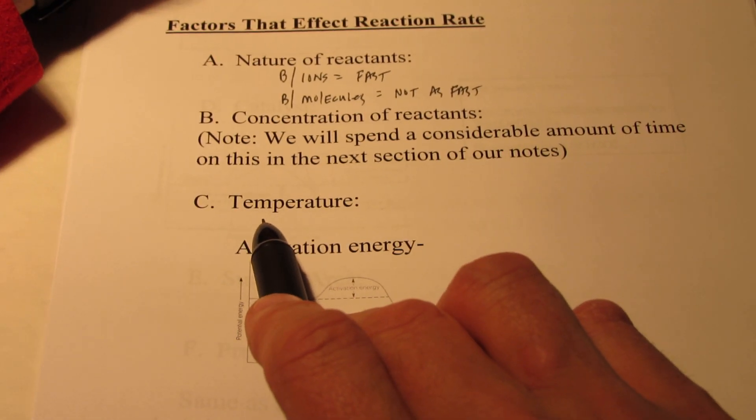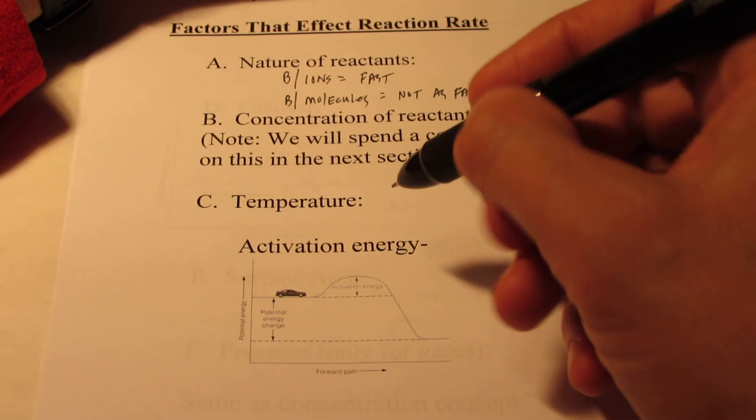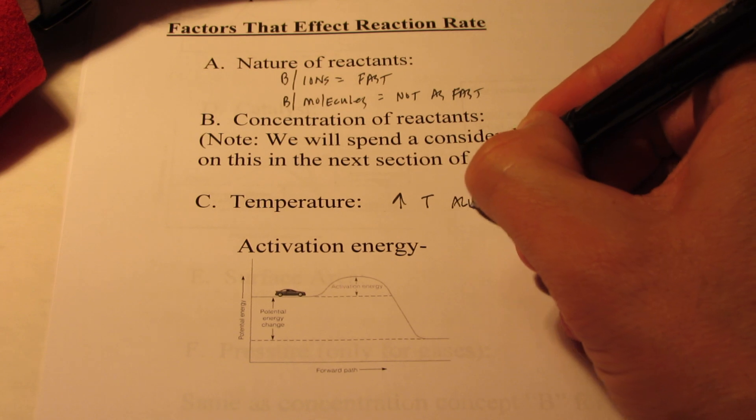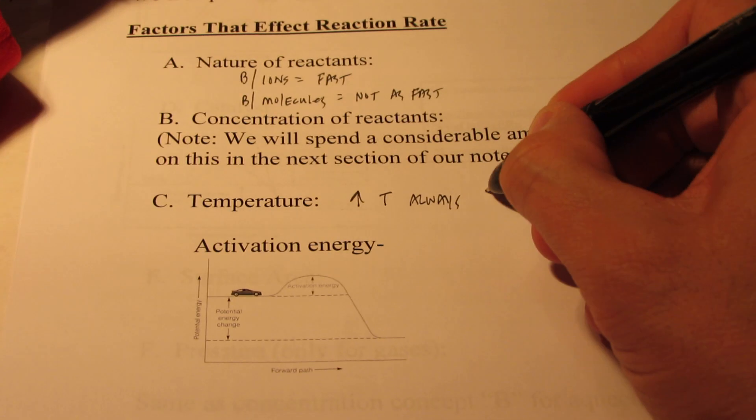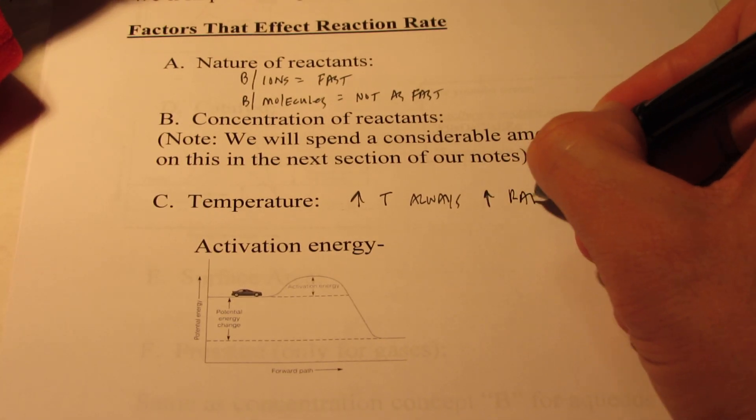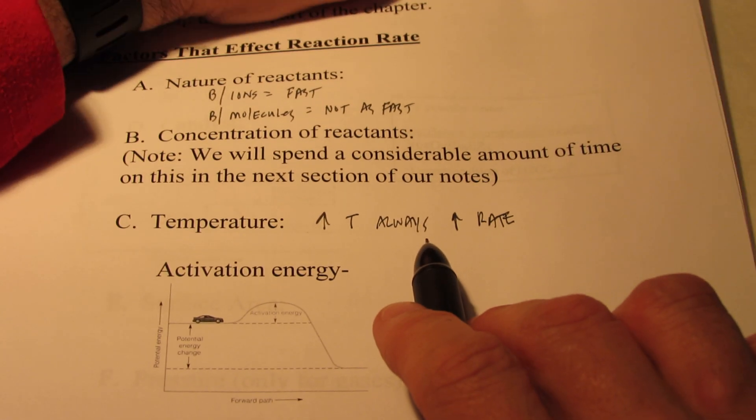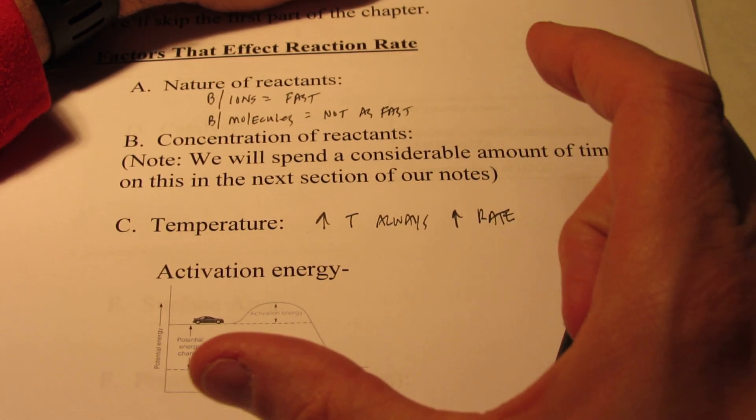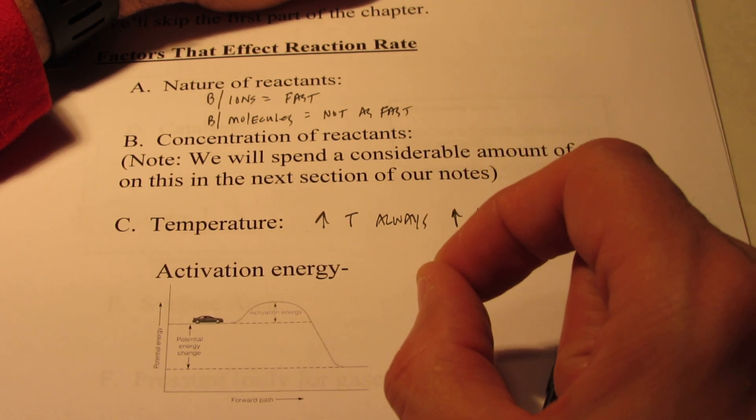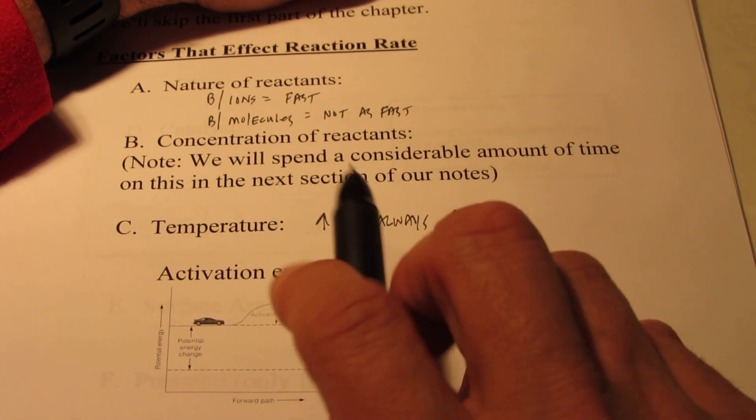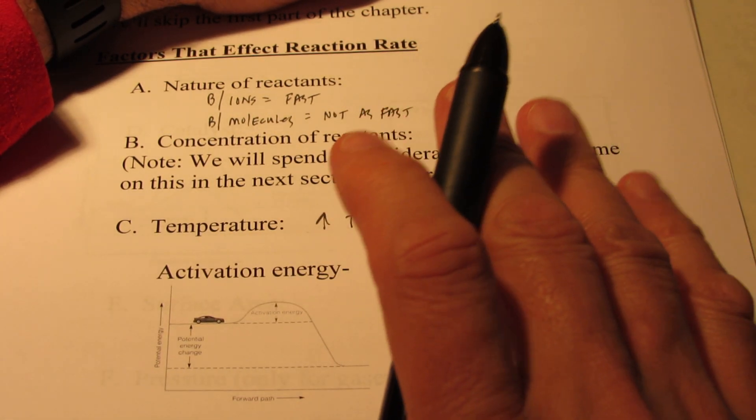Temperature plays a big role in the rate of a reaction. An increase in temperature will always increase the rate of a reaction. In order for a reaction to occur, two molecules need to hit each other in the proper orientation with the proper energy. If the temperature is increasing, the particles are moving around faster.